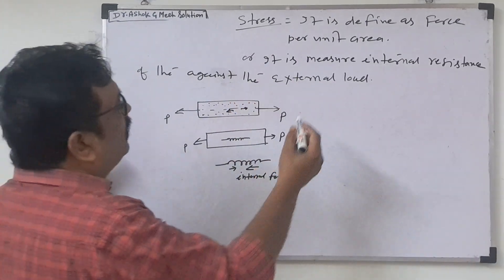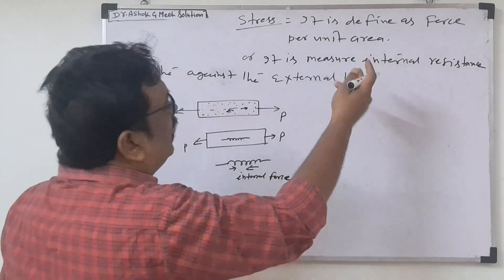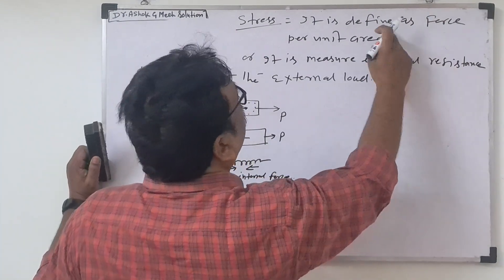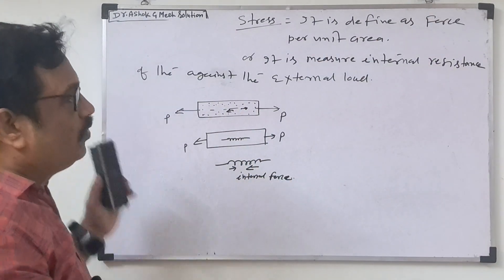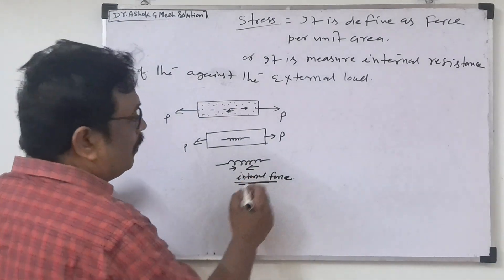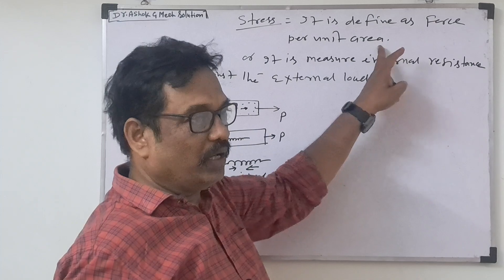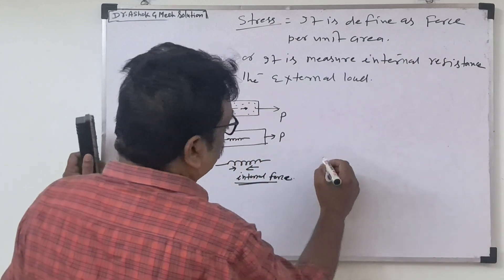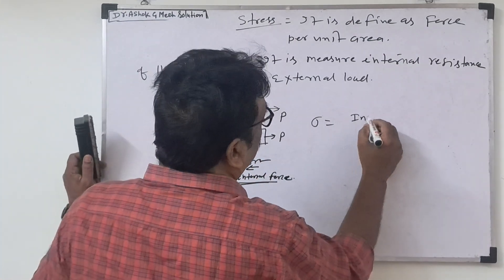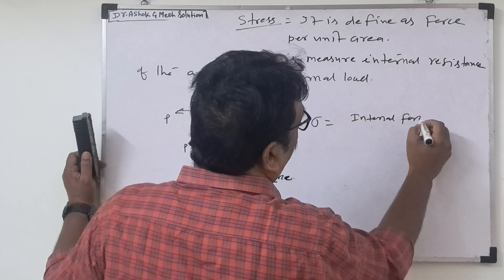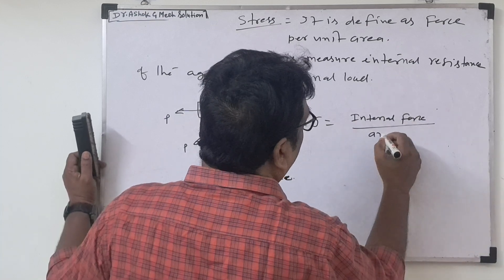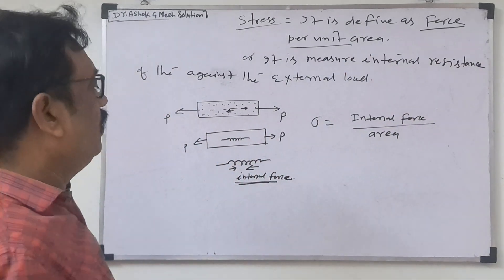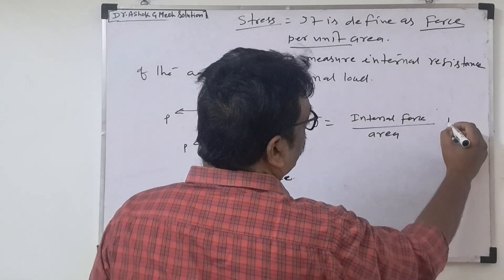That is why stress is defined as internal force per unit area. Students often remember it simply as force per unit area, but the correct definition is: stress equals internal force per unit area. Sigma (stress) = internal force per unit area.